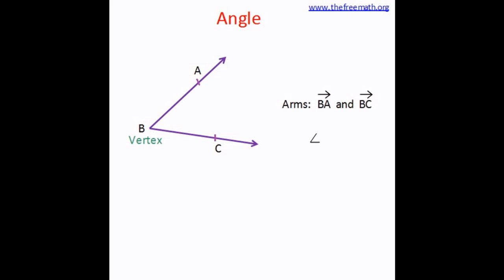When we want to show an angle, this is the symbol which is used. Now this angle can either be called ABC or it can be called CBA. That means the vertex always comes in the middle when you are naming an angle.